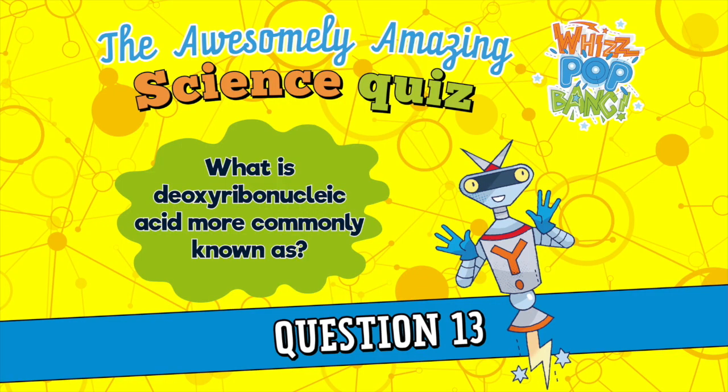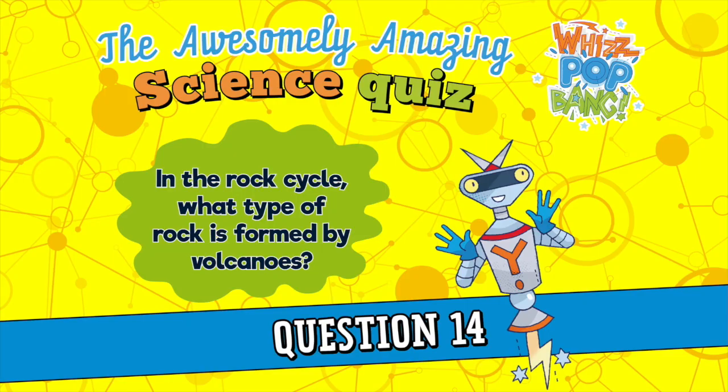Question number thirteen. What is deoxyribonucleic acid, more commonly known as? Question number fourteen. In the rock cycle, what type of rock is formed by volcanoes?